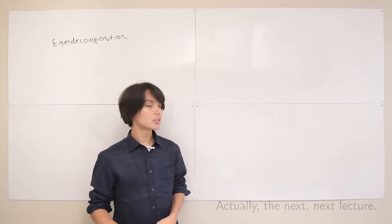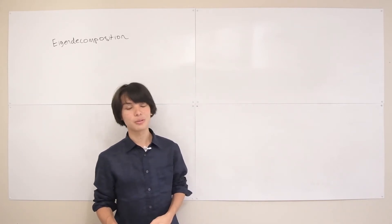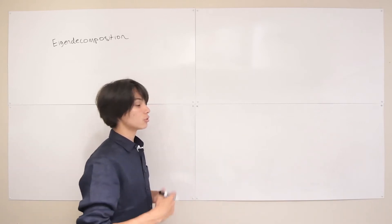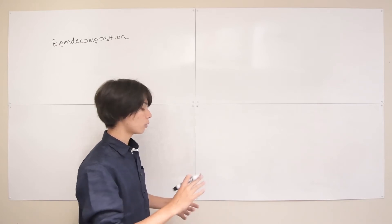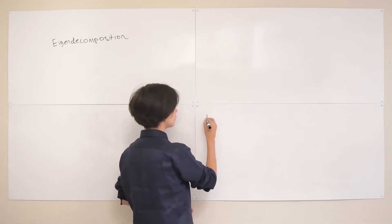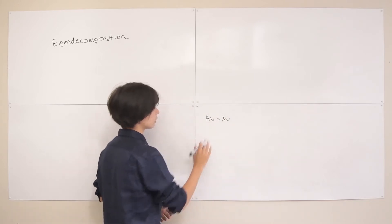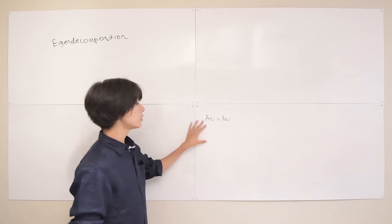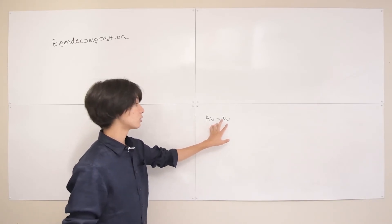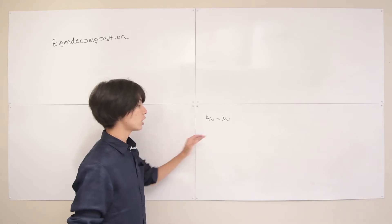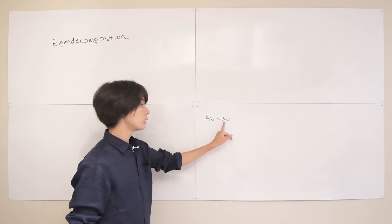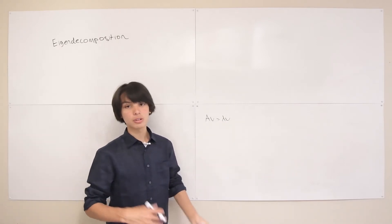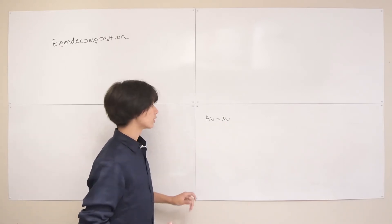Let's start off with a quick recap on last time's lecture. We first introduced eigenvalues and eigenvectors, and they can basically be summed up by one formula: Av equals lambda v, which tells us what eigenvectors and eigenvalues are and how they relate to each other. This tells us that for some matrix A, there exist eigenvectors v that when transformed by A don't change directions — they're just scaled by some scalar eigenvalue lambda.